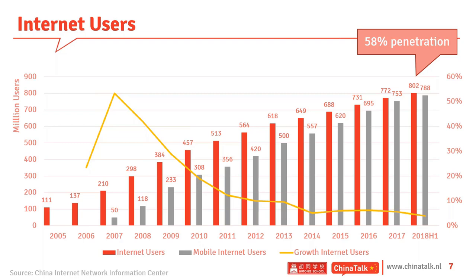What you also see — the gray bar — is that the majority of people access the Internet through their smartphone, through their mobile phone. This is a very important and very specific characteristic of the Chinese e-commerce market. It is a very important driver of the market.